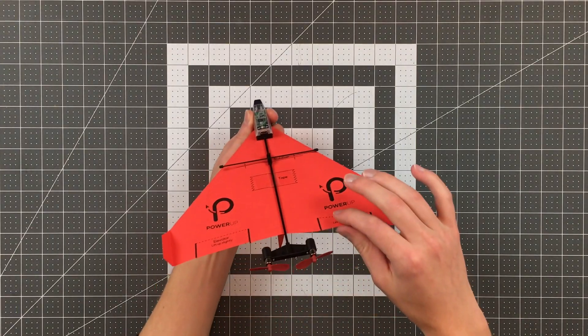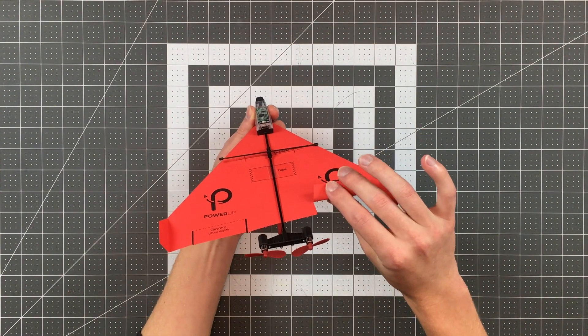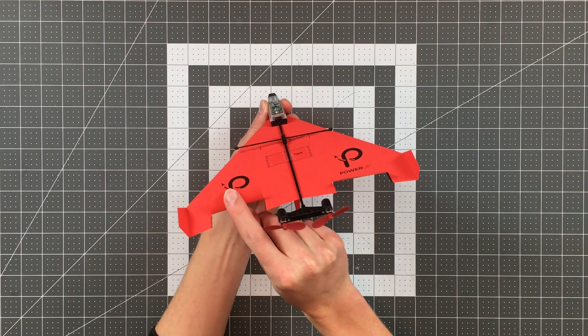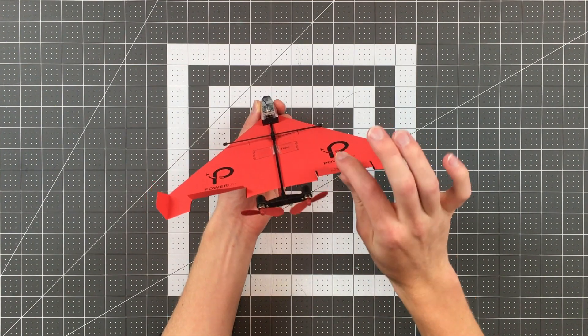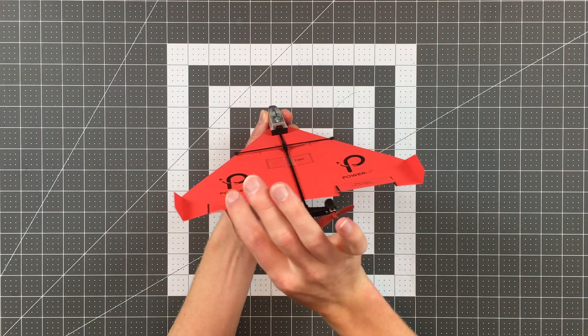Once you've selected a field to fly in, you're ready for your first test flight. Now we recommend for that first test flight that you don't use any power from the module at all. Just throw the plane and see how it's flying. This will allow you to assess whether the plane is flying well or whether you're going to need to make some adjustments. If it dives into the ground, bend the elevators up slightly. And if it's stalling, you can reduce the angle of those elevators.